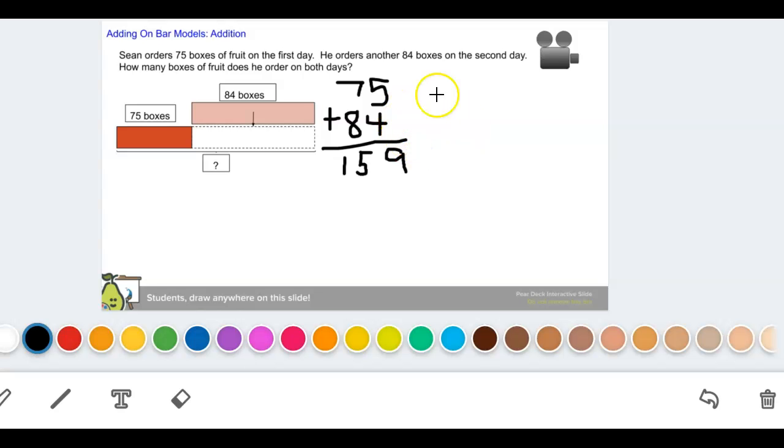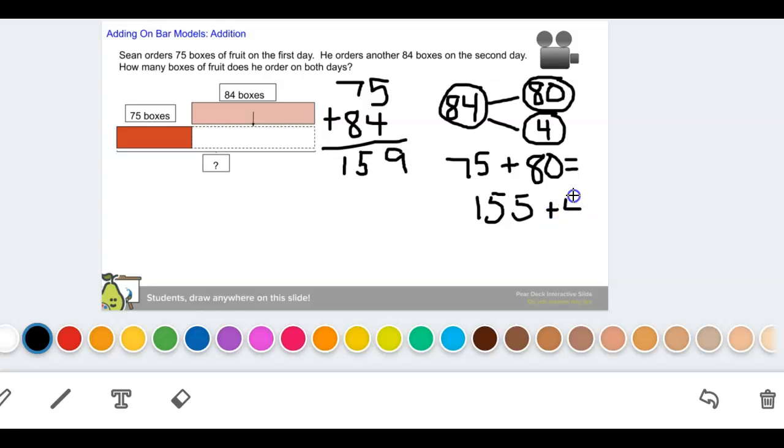I could use number bonds, so I'm going to say that I have 84. And I'm going to number bond this to 80, a friendly number, and 4. So I'm going to say 75 plus 80 equals 155, plus 4 gives me 159. So that's using number bonds.